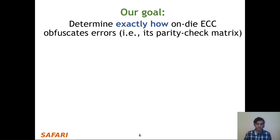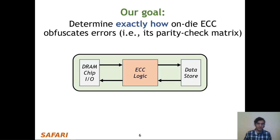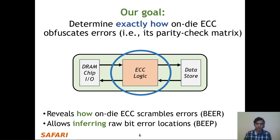To overcome these challenges, our goal is to determine exactly how on-die ECC obfuscates errors, in other words, to determine its parity check matrix. In the context of a real DRAM chip, this means we want to know exactly what happens within the ECC logic, because this would both reveal exactly how on-die ECC scrambles errors and allow us to infer raw bit error locations corresponding to uncorrectable observed errors.